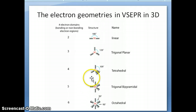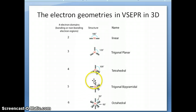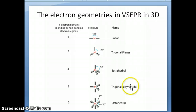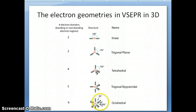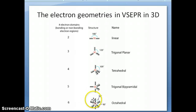The trigonal bipyramidal structure is basically two pyramids — the base of the pyramid is a triangle, with one pyramid going to the top and one going to the bottom, which is why it's called trigonal for the triangular base and bipyramidal for the two pyramids. If you have six electron pairs around the central atom, you get the octahedral structure, which is similar to trigonal bipyramidal except that instead of a triangular base you have a square base with four electron pairs in the center.